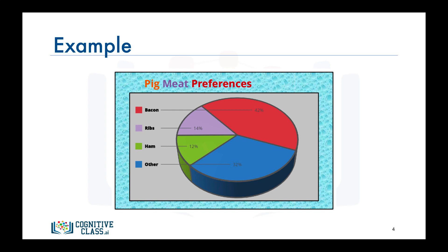So let's apply Dark Horse Analytics' approach to transform this into a visual that's more effective, attractive, and impactive. As I mentioned earlier, the message here is that people are most likely to choose bacon over other types of pig meat. So let's get rid of everything that can be distracting from this core message.